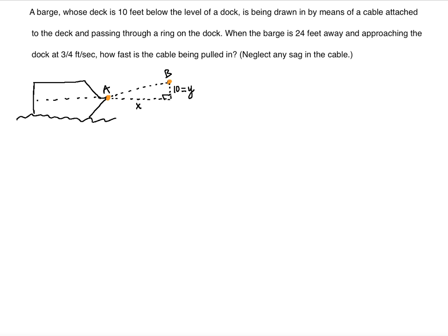Let's read the keywords. 10 we marked already, passing through a ring. When the barge is 24 feet away, so x is equal to 24. Approaching the dock at 3/4 feet per second, so it means that the distance from, let's label this as C. AC is 24, but the distance is decreasing because the boat is approaching the dock. So this distance from A to C decreases with time.